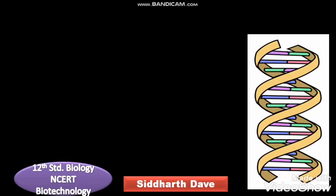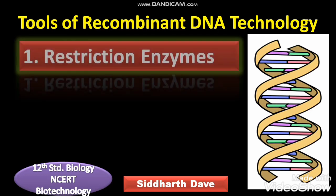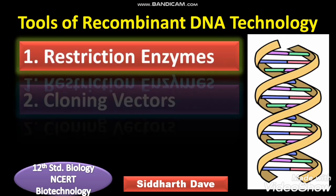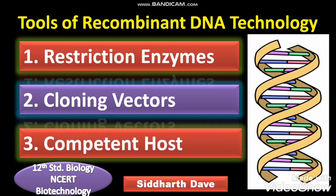You know very well that there are three tools of recombinant DNA technology. The first tool is the restriction enzyme, the second tool is the cloning vector, and the third tool is the competent host. We have already discussed the restriction enzyme and the cloning vectors in our earlier video. If you haven't seen it, you can watch it so that you will better understand competent host. Today we are going to discuss about the competent host.